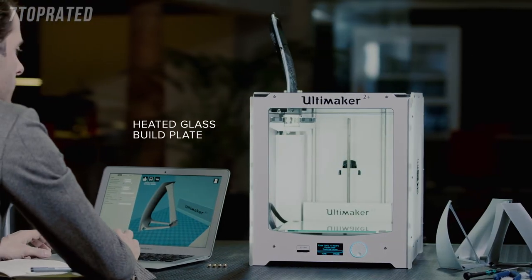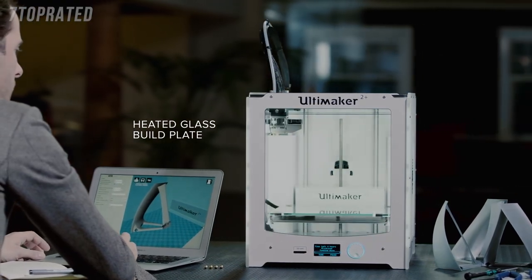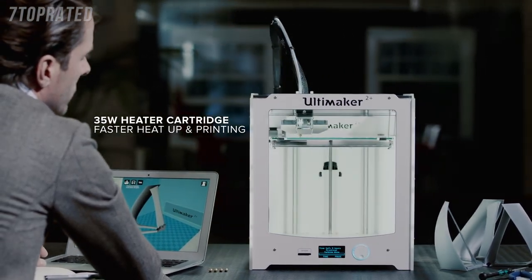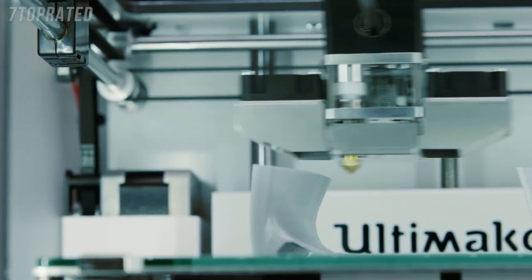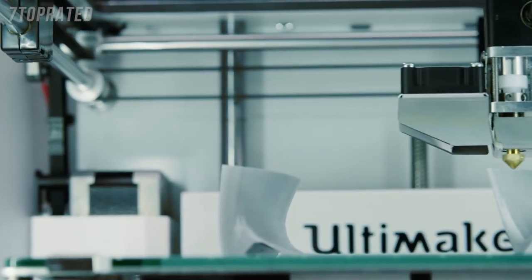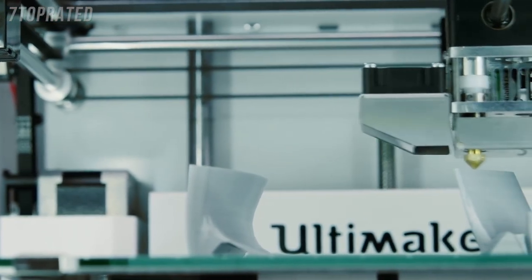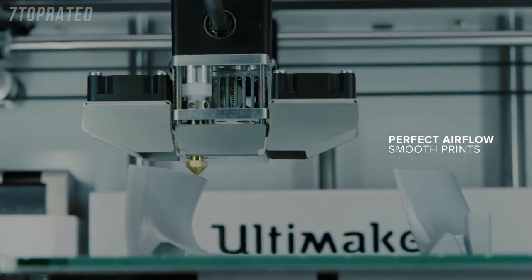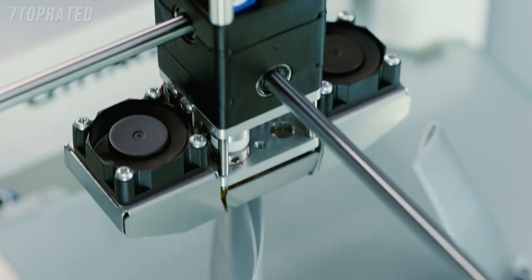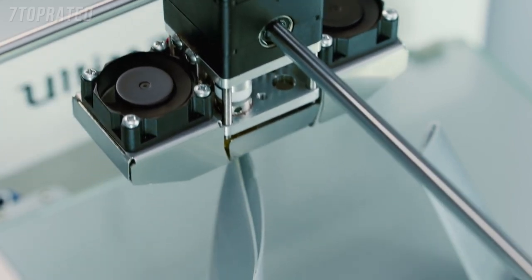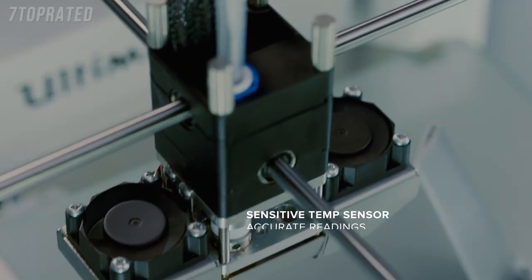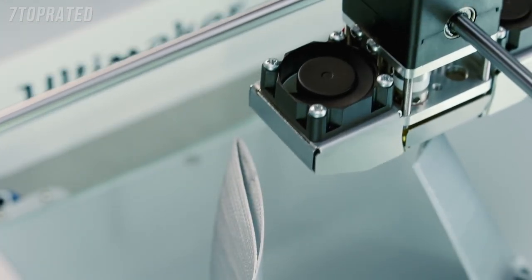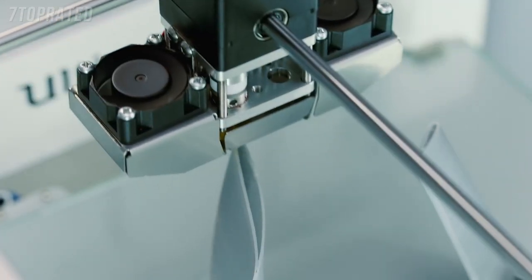Because it has a heated glass build plate, you can print using many different materials. The Ultimaker 2+ has a powerful 35-watt heater cartridge, which not only heats the nozzle in under a minute, but also allows for really fast prints. The new fan caps ensure the airflow is aimed perfectly below the nozzle and equally from both sides, whilst the new Sunon fans are barely audible. Its new sensitive temperature sensor provides accurate readings so you can tweak the settings with precision for optimized print quality.